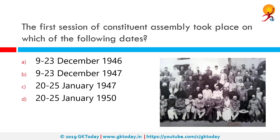The first session of the Constituent Assembly took place on which of the following dates? The correct answer is 9th to 23rd December 1946. This took place in Constitutional Hall in New Delhi. Sachidananda Sinha was the first president of the Constituent Assembly. In the first meeting, the assembly adopted an Objective Resolution which later became the Preamble of the Constitution.